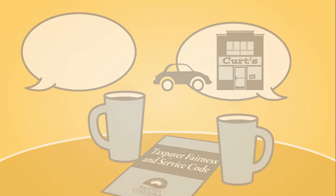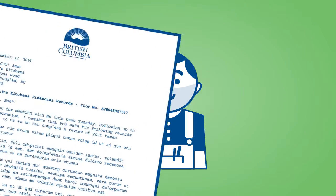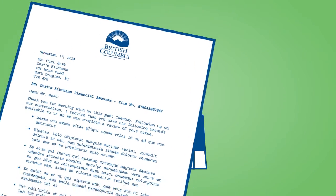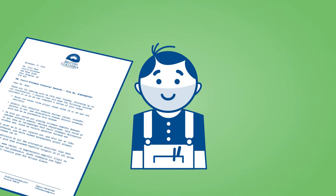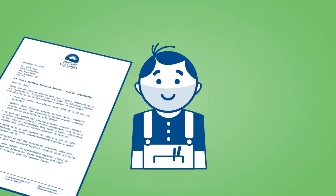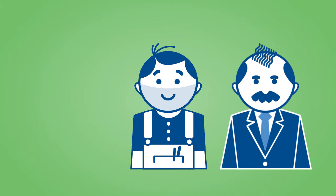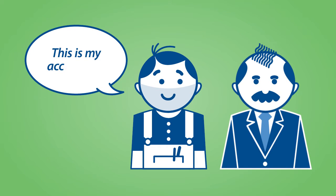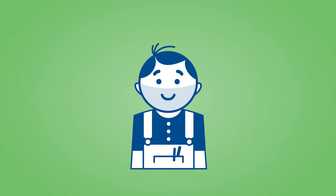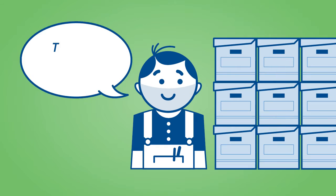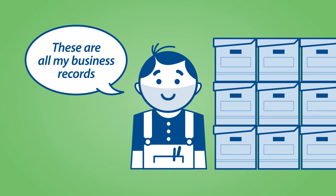After the pre-audit discussion, Curt will receive a letter outlining the records he needs to make available. Curt may want to provide a contact person to work with the auditor, such as his accountant or bookkeeper, or another knowledgeable member of his staff. To ensure an efficient audit, Curt can minimize the disruption to his business by having all business records the auditor has requested available for review.